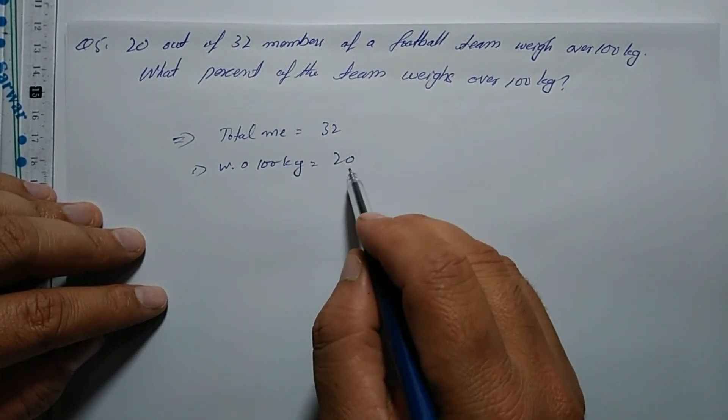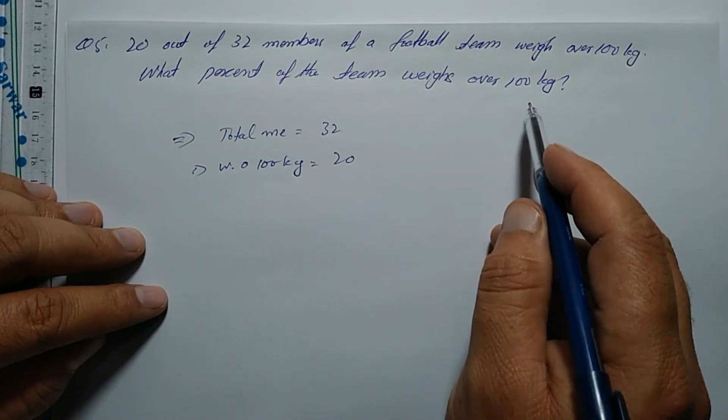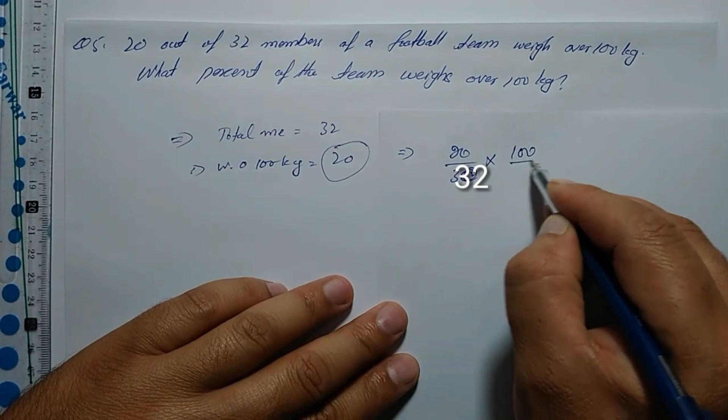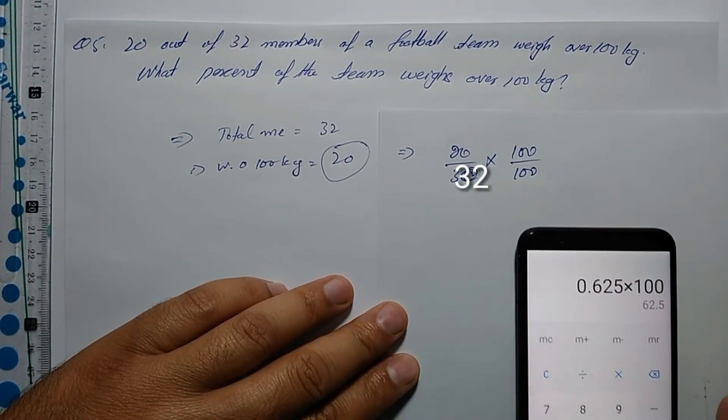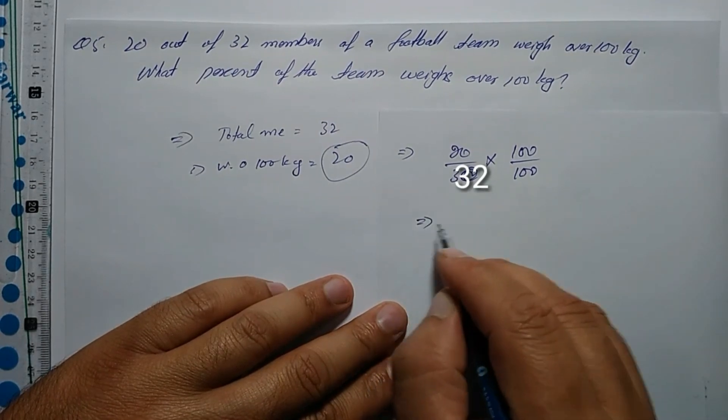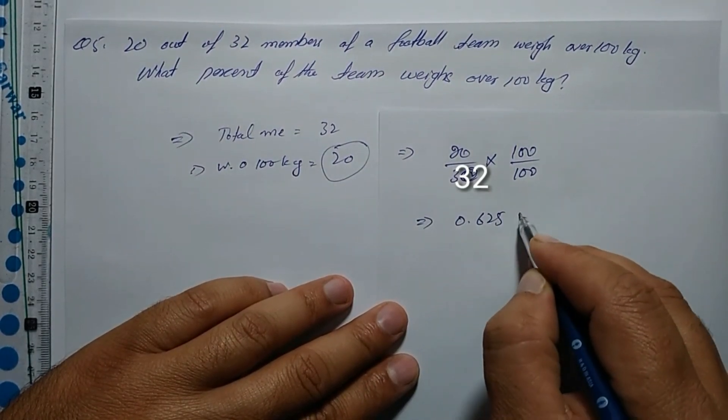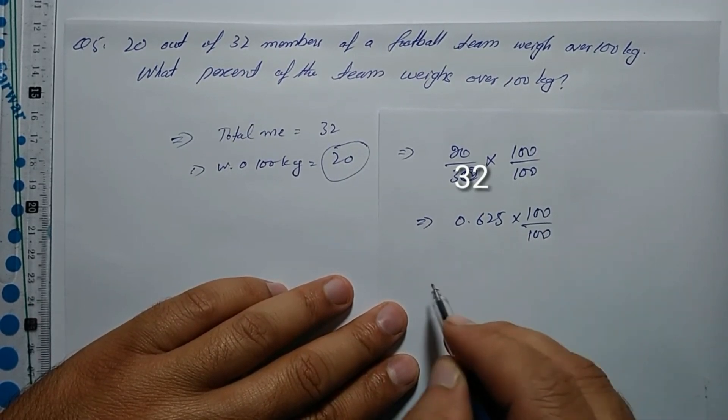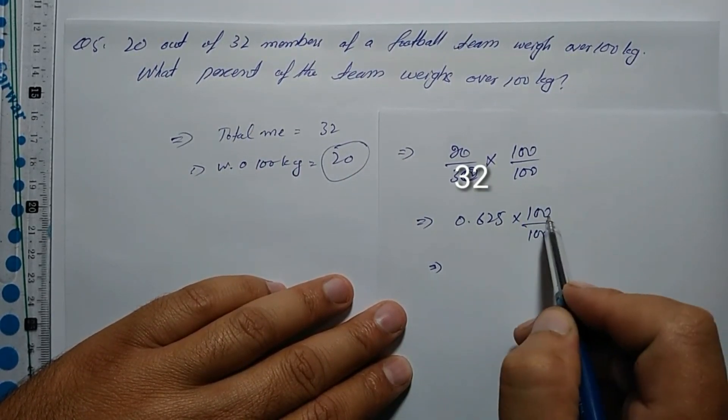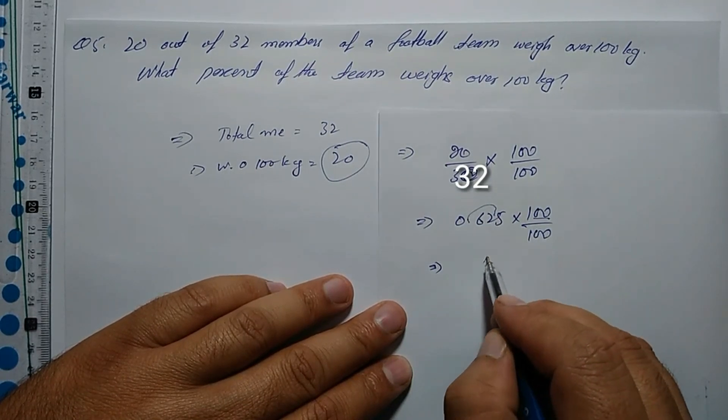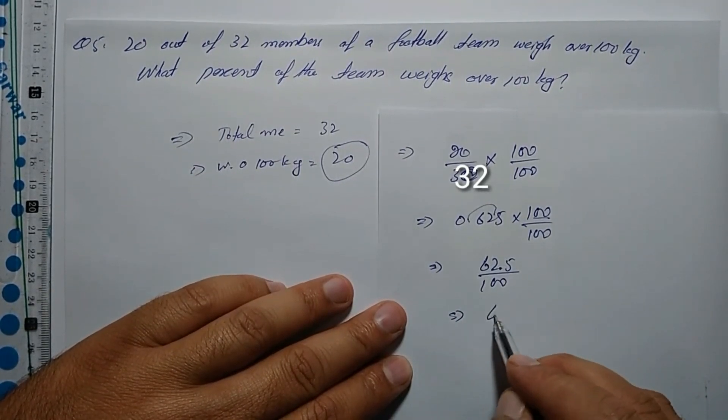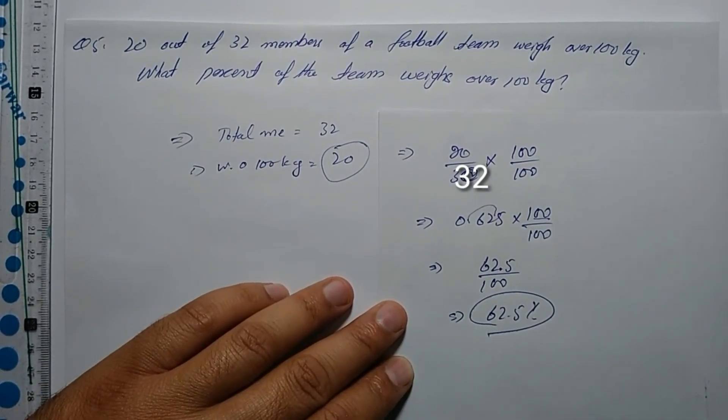So we calculate 20 over 32, multiply by 100 over 100 to convert to percentage. First divide 20 by 32, which gives 0.625. Multiply by 100 equals 62.5 percent. When 100 is in the denominator, it becomes a percentage directly.